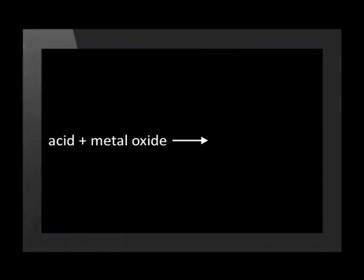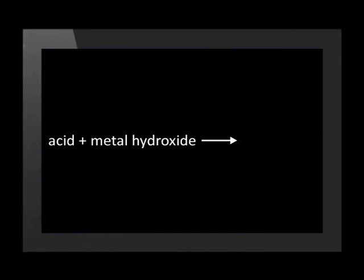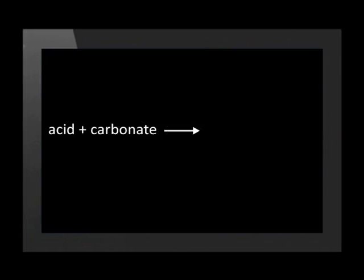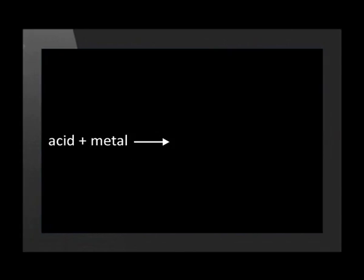Previously, when we studied some reactions of acids and bases, we formed general equations such as: acid plus a metal oxide forms a salt and water; acid plus a metal hydroxide forms a salt and water; and acid plus a carbonate forms a salt and water. Later, we will look at each of these types of reactions again.